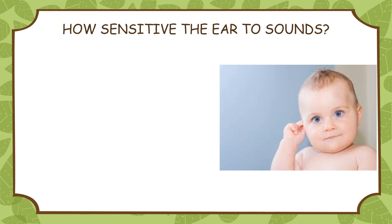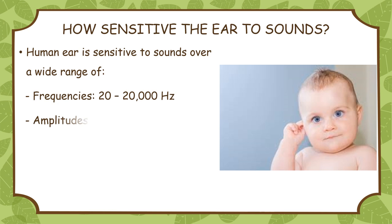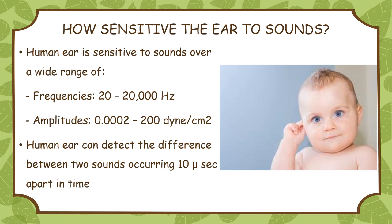How sensitive is the ear to sound? The human ear is sensitive to sound for a wide range of frequencies, that is 20 to 20,000 Hertz, and amplitudes from 0.0002 to 200 dynes per square centimeter. The human ear can detect the difference between two sounds occurring within an interval of 10 microseconds.